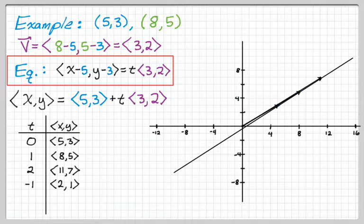And then I could go with negative values of t. So if t is negative 1, I get 2, 1. Another vector whose terminal point is on the line. Negative 3 would give me negative 4, negative 3, which is another vector whose terminal point is on the line. So that's really what's happening here.